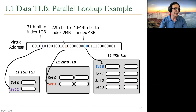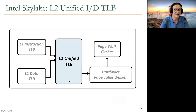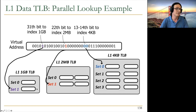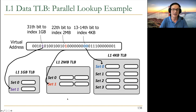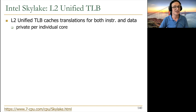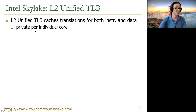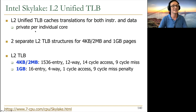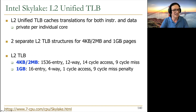The one-gigabyte TLB has only four entries but can address four gigabytes of memory. The two-megabyte TLB has 32 entries covering 64 megabytes. The 64-entry four-kilobyte TLB covers 256 megabytes. Virtual-to-physical mappings are inserted into the corresponding TLB after a miss. Intel designed three separate TLBs for different page sizes rather than a unified structure.